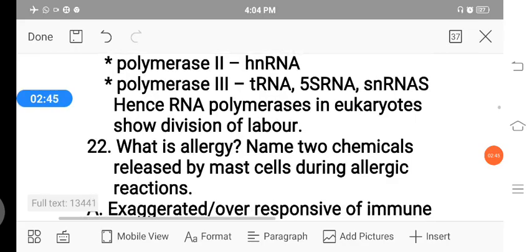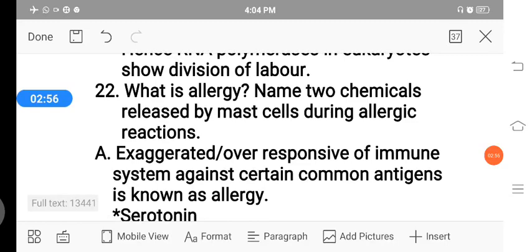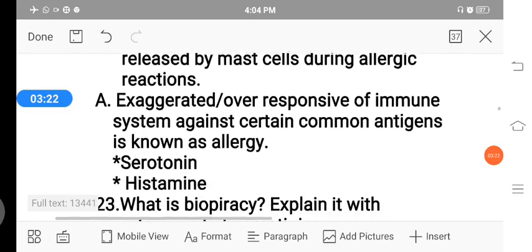The next question is, what is allergy? Name two chemicals released by mast cells during allergic reaction. Allergy is defined as exaggerated or over-response of immune system against certain common antigen. During the allergic reaction, two chemicals are released by mast cells, those are serotonin and histamine.